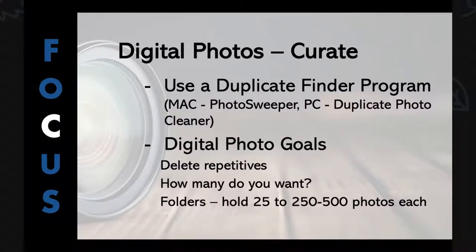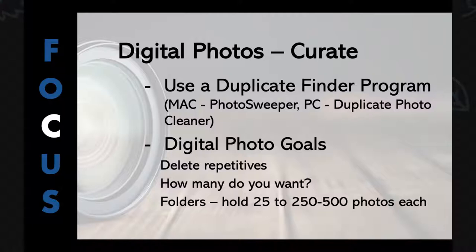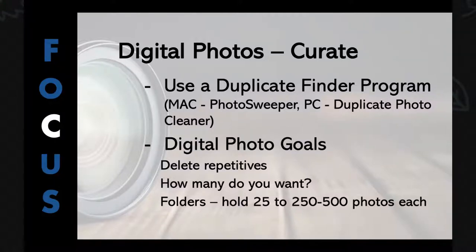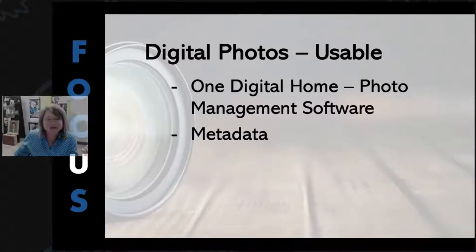Once we've got our folders with duplicates eliminated — by the way, I've seen people go from 25,000 digital pictures down to 13,000, that's how many duplicates they had — this curate part is really important. Once we're done with the curating, we want to make the pictures usable. By this I mean we can find the pictures we want when we need them. We have an event coming up, we want to search for a couple's anniversary pictures, or it's a graduation and we want pictures of a child growing up — we have to be able to find them.